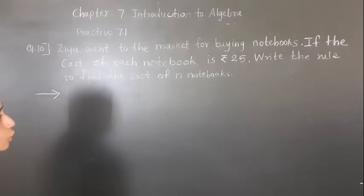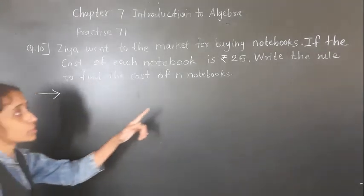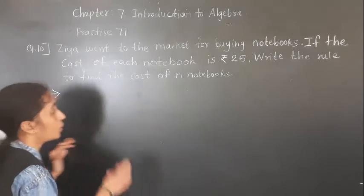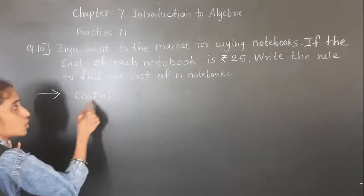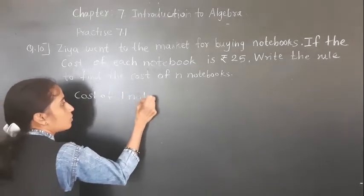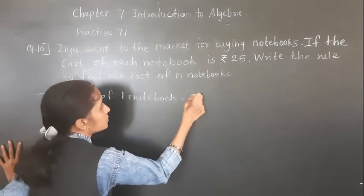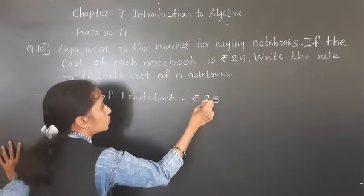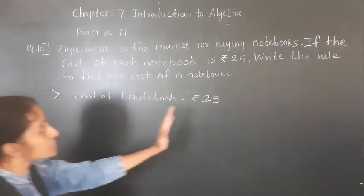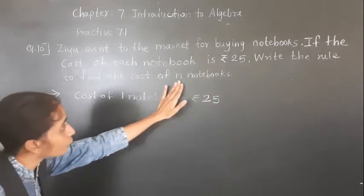Ziya went to the market for buying notebooks. The cost of each notebook is rupees 25. What is given? The cost of one notebook is rupees 25. Now what is asked? Write the rule to find the cost of N notebooks.